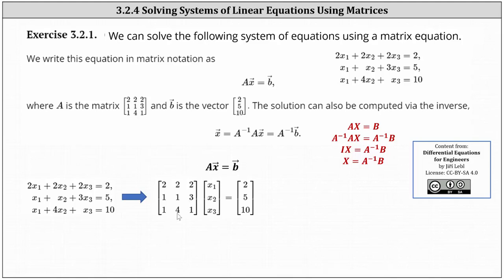Again, we have the coefficient matrix times vector x as a column matrix equals vector B as a column matrix. Now we need to solve this for vector x. Let's look at the notation shown here in red — I'm using matrix notation instead of vector notation, but it is equivalent.